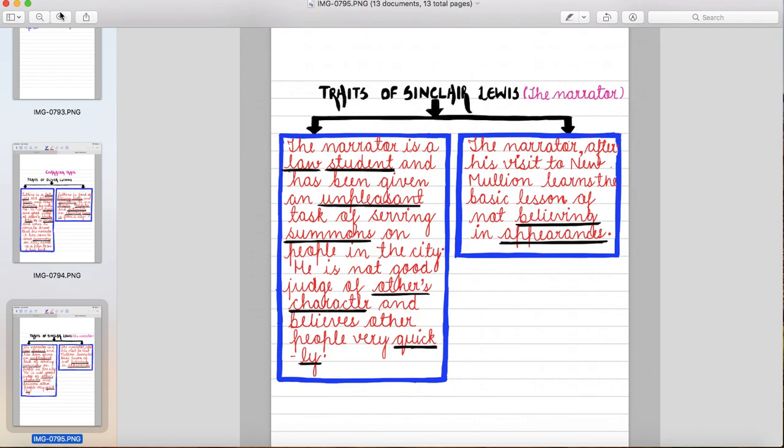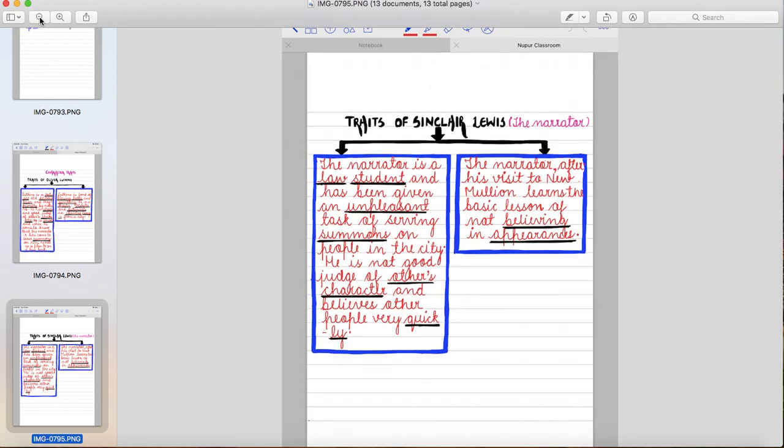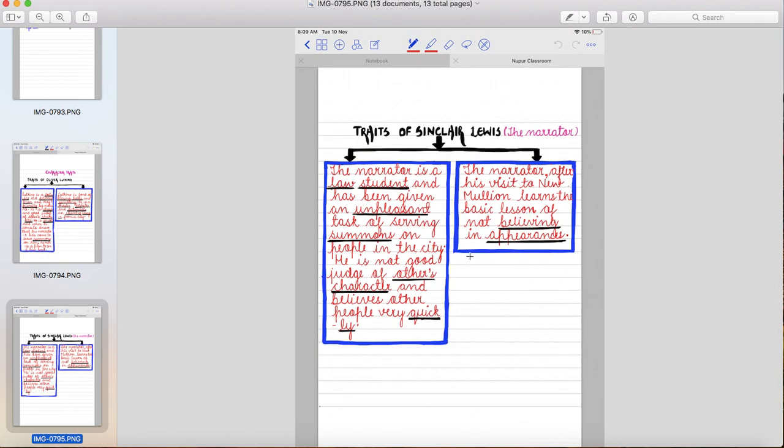The narrator after his visit to New Mullion learns the basic lesson of not believing in appearances. Narrator jab New Mullion tak aata hai toh ek basic lesson learn karta hai ki logon ko face value se nahin judge karna chahiye, of not believing people in appearances. Jaisi log lagte hai, zaruri nahin hai woh vaise hi hai.